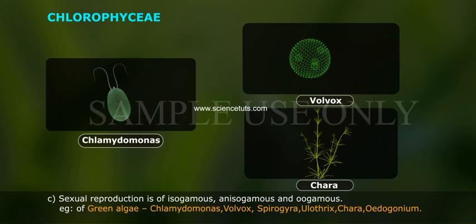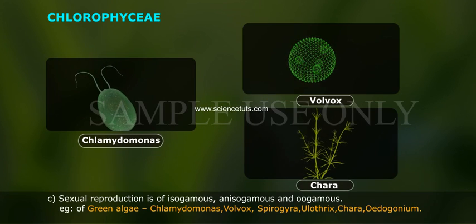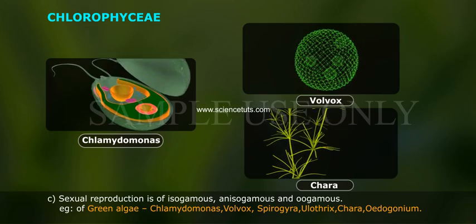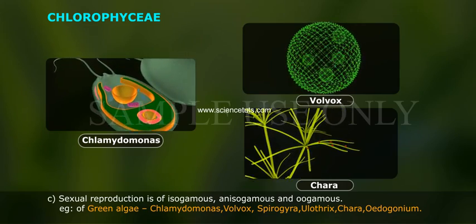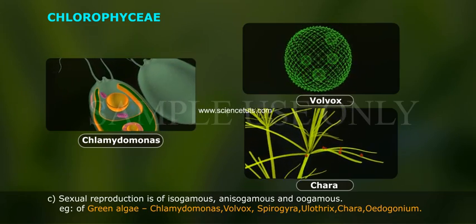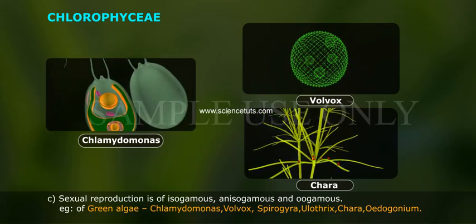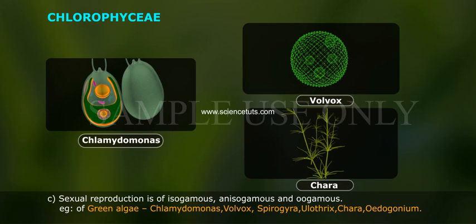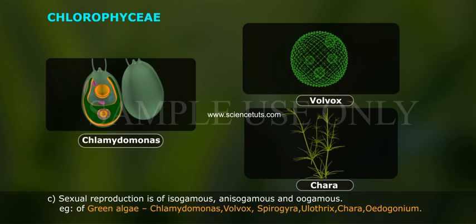c. Sexual reproduction may be isogamous, anisogamous, or oogamous. Examples of green algae: Chlamydomonas, Volvox, Spirogyra, Ulothrix, and Chara.